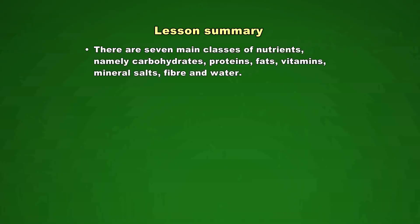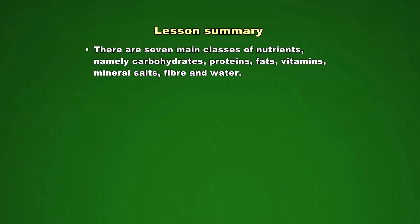Let us summarize what we learned about nutrition. There are seven main classes of nutrients, namely: carbohydrates, proteins, fats, vitamins, mineral salts, fiber, and water.